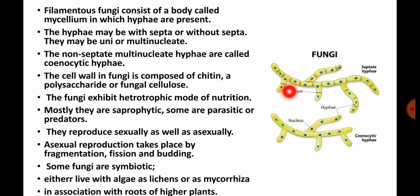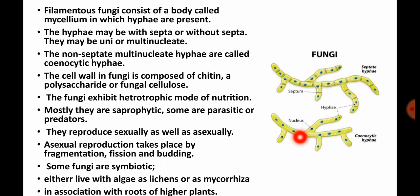The mode of nutrition is heterotrophic. Most fungi show saprophytic nutrition, meaning they depend on dead and decaying matter. They show asexual reproduction by fission, budding, and fragmentation. Some fungi are symbiotic in nature. For example, lichens are a combination of fungi and algae — algae provide food for fungi and fungi provide shelter for algae, so both are mutually benefited.